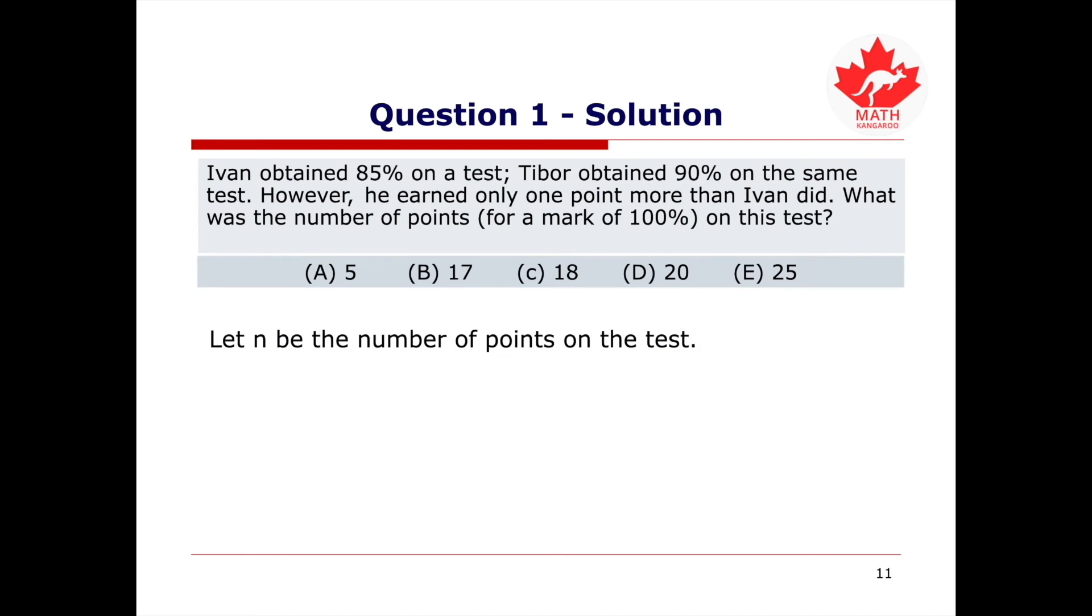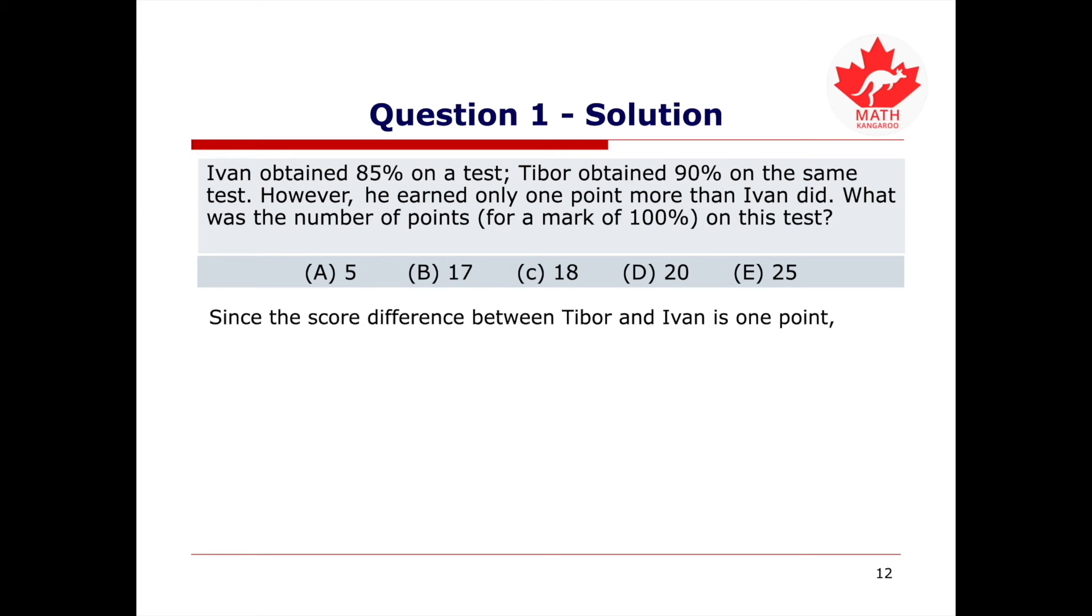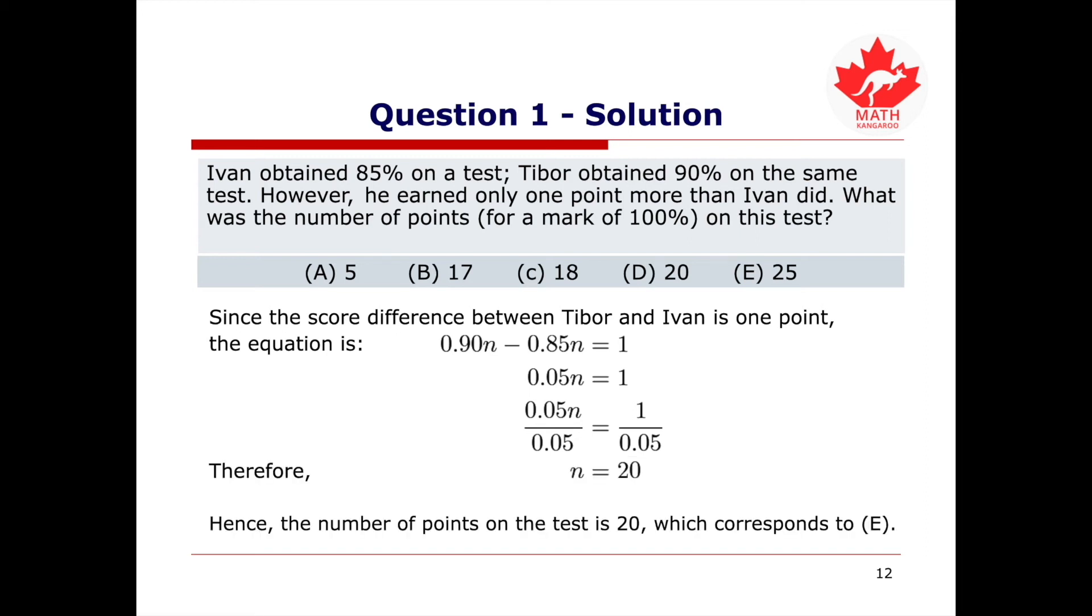To start the problem, let n be the number of points on the test. Since we know that 85% is equal to 0.85 and 90% is equal to 0.90, we can say Ivan obtained 0.85n points and Tibor obtained 0.90n points. Since the score difference between Tibor and Ivan is one point, you may write the following equation to determine the total number of points on the test, which is represented by n. The equation is 0.90n minus 0.85n equals 1, and we get 0.05n equals 1. To isolate n, we divide both sides by 0.05, and we get n equals 20. Hence, the number of points on the test is 20, which corresponds to E.